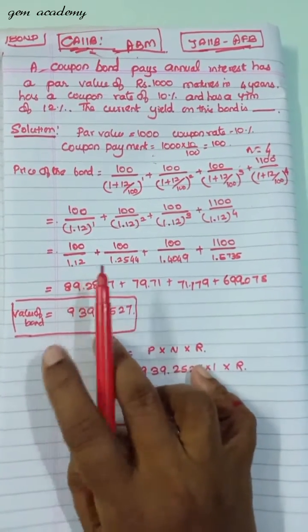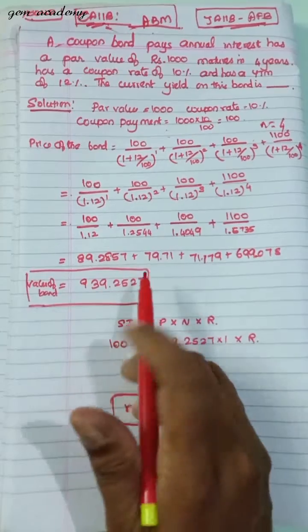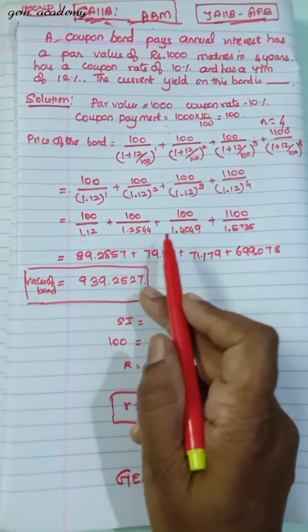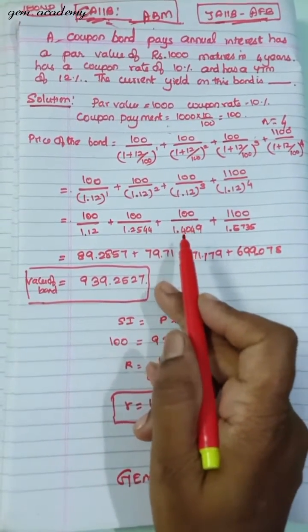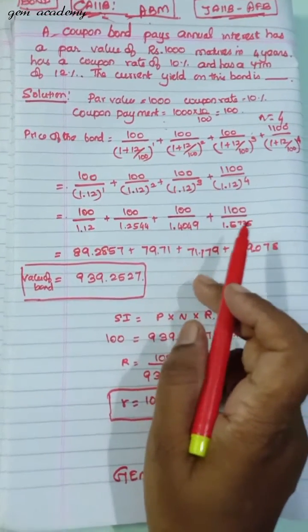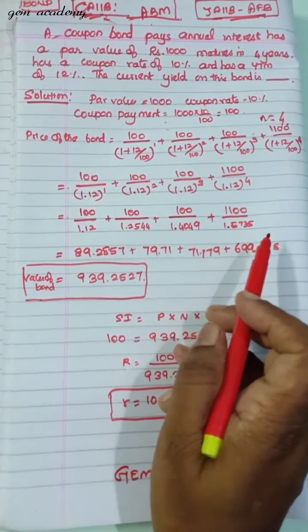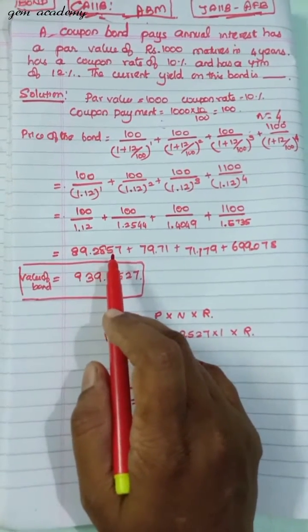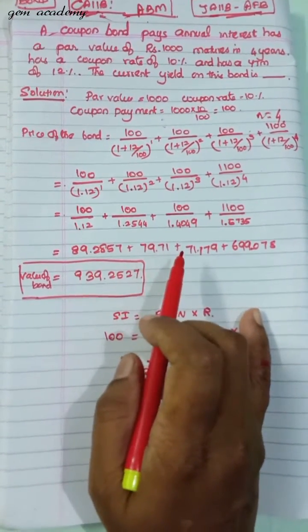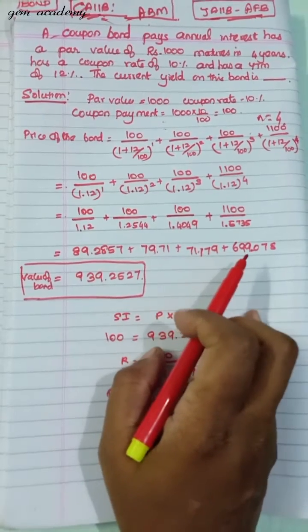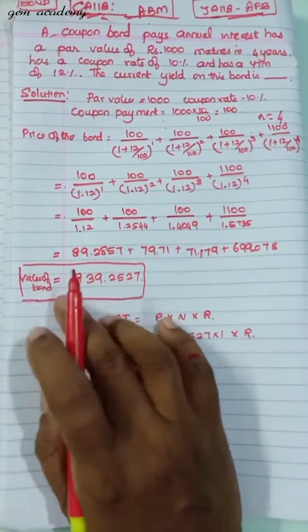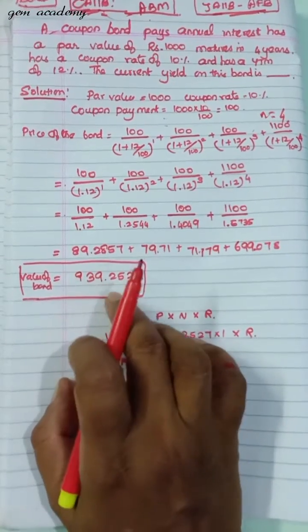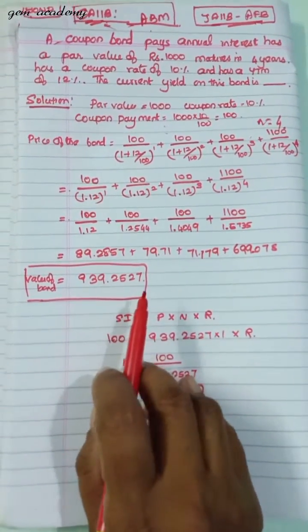By solving this, computing each term: 89.2857, 79.71, 71.179, and 699.078. By adding these I'm getting the value of the bond is 939.2527.